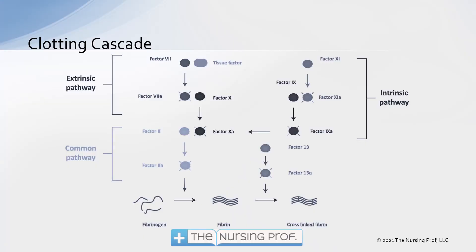First of all, we need to breeze through the clotting cascade and understand that there's more than one way that a clot can form in the body. Looking at this picture, which is a simplified view of the clotting process, we can see there are two different pathways: an intrinsic pathway and an extrinsic pathway. One key takeaway is that there are multiple mechanisms for clotting to occur.